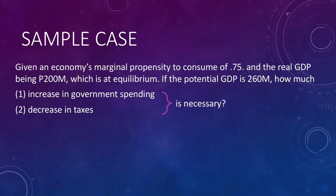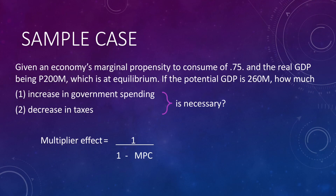To appreciate fiscal policy, let us apply this to the following case. Given an economy's marginal propensity to consume of 0.75 and a real GDP of 200 million, if the potential GDP is 260 million, how much increase in government spending or decrease in taxes is necessary? We start by calculating the multiplier. Given that the MPC is 0.75, the multiplier is 1 divided by (1 minus MPC), that is 1 over (1 minus 0.75), which gives a multiplier of 4. So for an initial change in spending of 1, the overall economy changes by 4 given the multiplier effect.